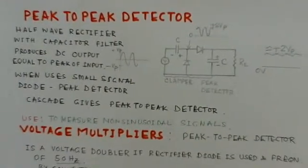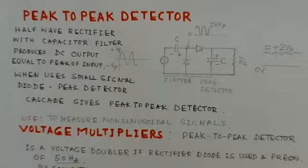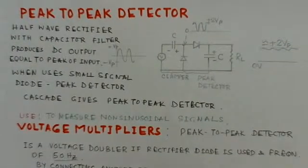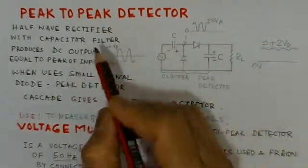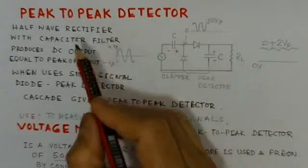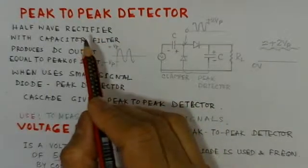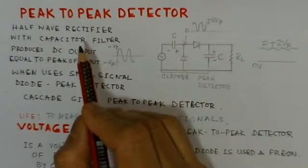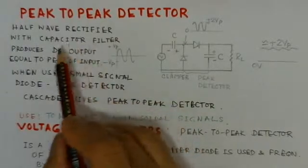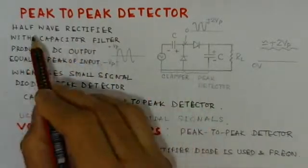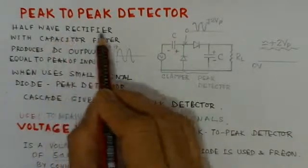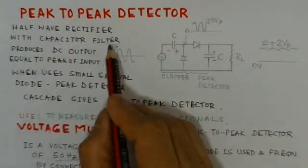Now we will talk about the peak detector circuit. This peak detector circuit is very important circuit, this appeared many a times in the case of analog circuits. Here what we notice, first thing is if you see the half wave rectifier with a capacitor filter.